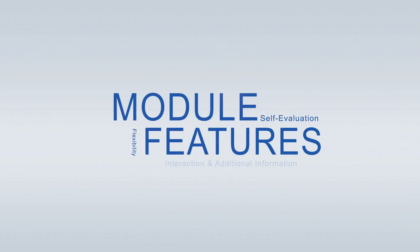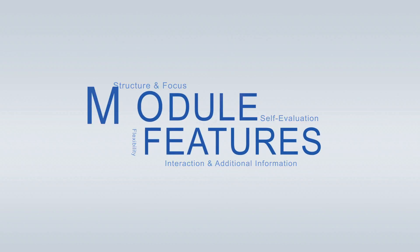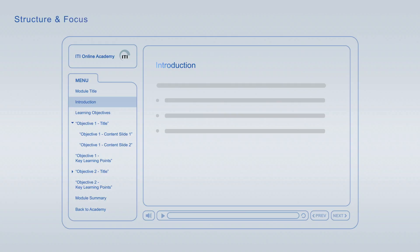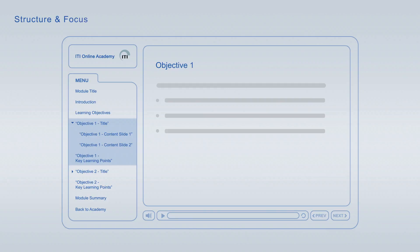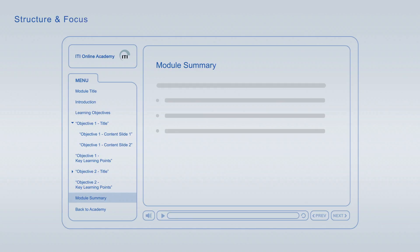ITI Online Academy learning modules offer a wide variety of features to optimise your learning. Every module starts off with an introduction followed by the learning objectives, giving you an overview of the main topics and learning goals covered. Each of the learning objectives is discussed in an individual topic chapter that concludes with a list of its key learning points. The summary at the end of each module combines the major key learning points across all learning objectives for final repetition and focus.